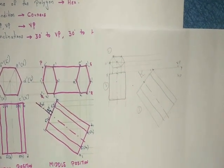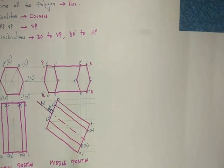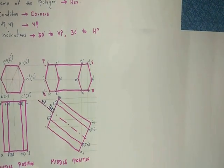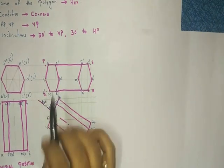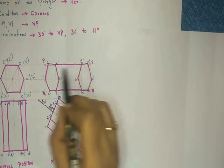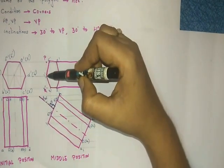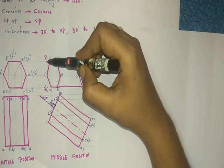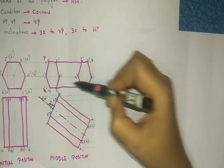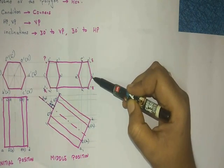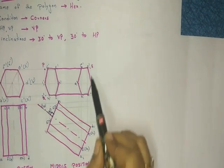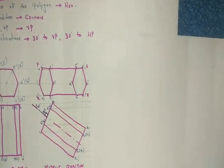Now, how to draw the third position: as we did in planes, assume the second position is inside a box. Here we have two hexagons — assume these two hexagons are in a box. Extend the starting corner and name it P, extend another as Q; the ending corners become R and S. So PQRS is a box consisting of the two hexagons.